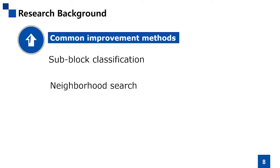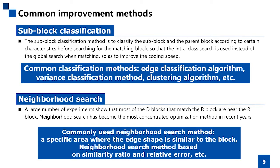There are mainly two common improvement methods. One is the sub-block classification method, and the other is the nearest neighbor search method. The sub-block classification method classifies the sub-block and the parent block according to certain characteristics before searching for the matching block, so that intraclass search is used instead of global search. The nearest neighbor search method only matches and searches the D block near the R block, changing global search to partial search to shorten the coding time.